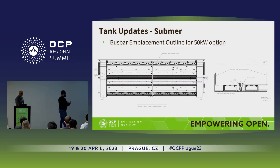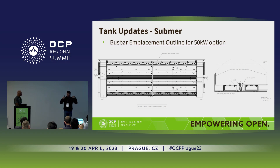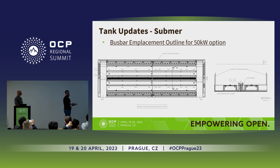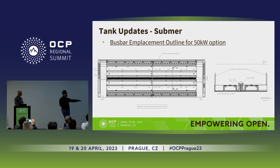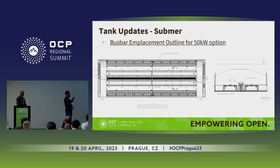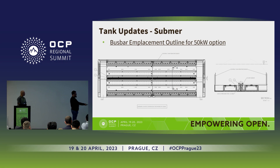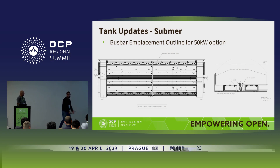Here is a tank update — this is how a tank looks from the top. Looking down, you see the CDUs at the corners on left and right, and as the latest OCP version 3 specification relates, a central bus bar in the middle. This example shows a 50-kilowatt implementation. The left and right sides act as fluid distributors, respecting natural convection going from bottom to top, with the bus bar placed in the middle.